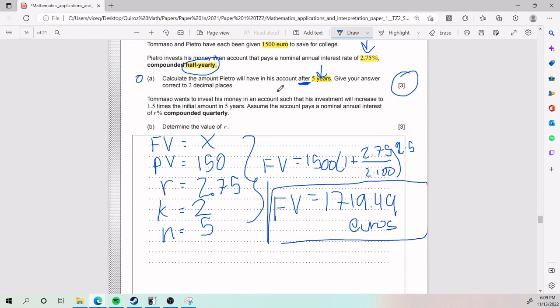For part B, we have that Tommaso wants to invest his money in an account such that his investment will increase to 1.5 times the initial amount in five years. Assume the account pays a nominal annual interest rate of R% compounded quarterly. For part B, they tell us to determine the value of R. So R is going to be the one that we're missing.